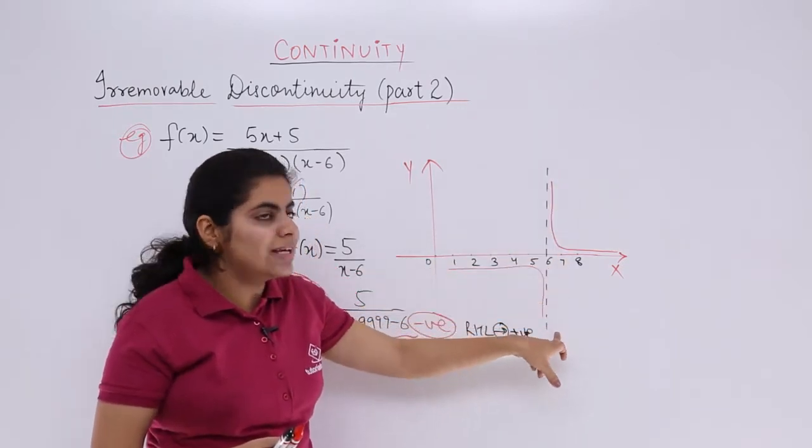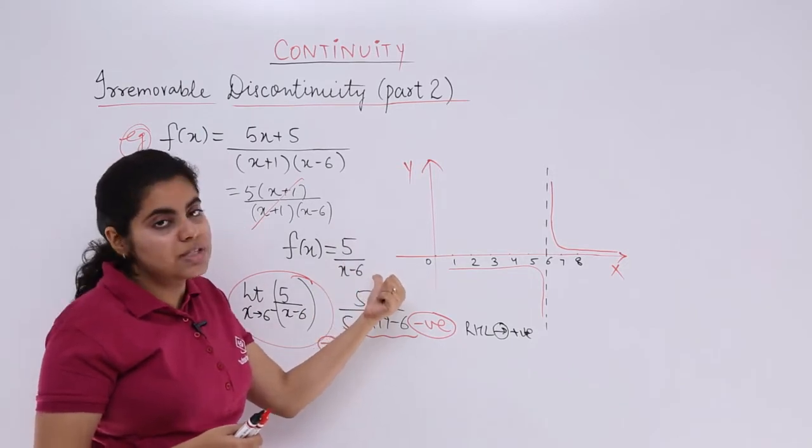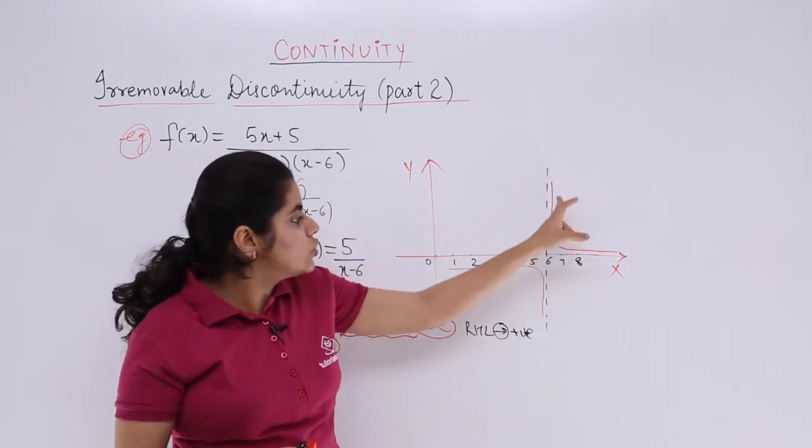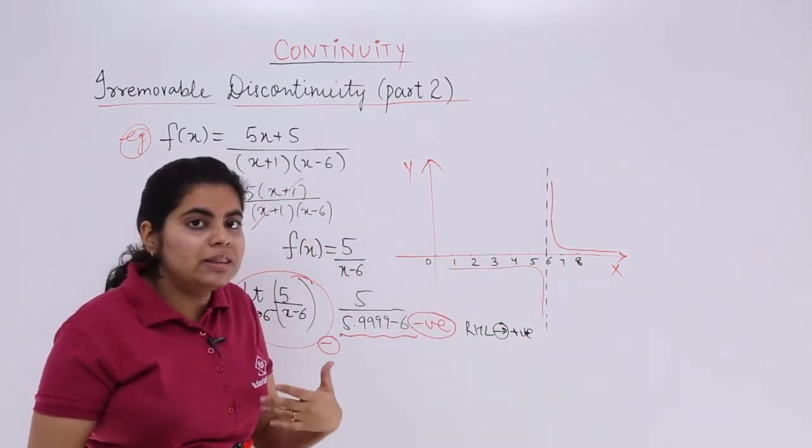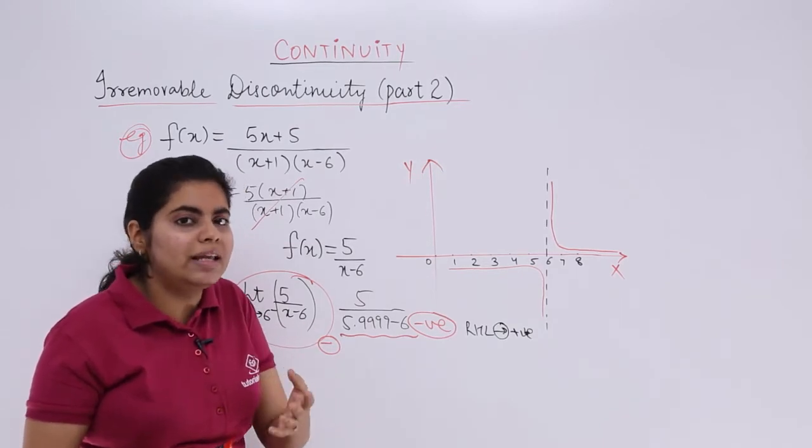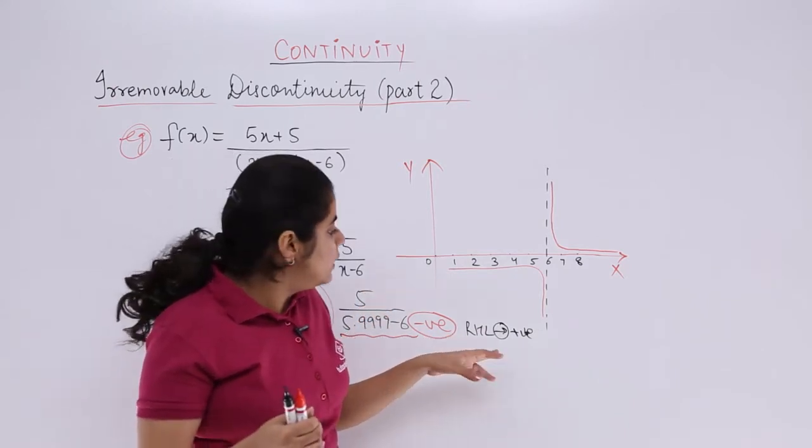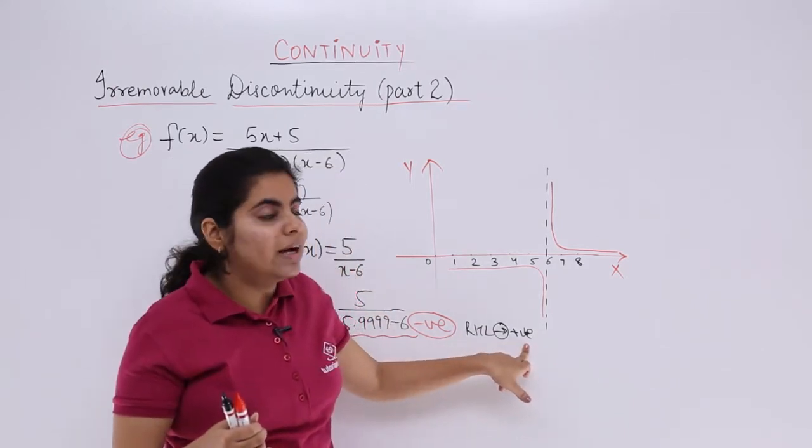I say that for 6 we cannot say anything because for 6, what happens? Exactly 6, I say it becomes 0 in the denominator. So it is just a dotted line. When things are greater than 6, that means RHL. 5.99 would be LHL. 6.001 would be RHL. When things are just greater, you have positive value.